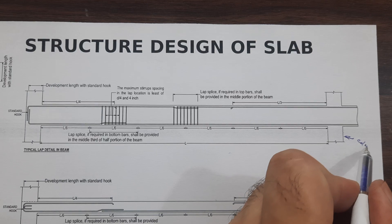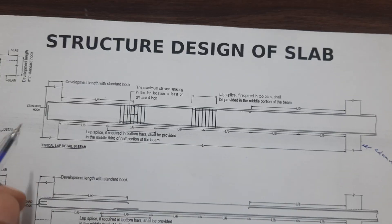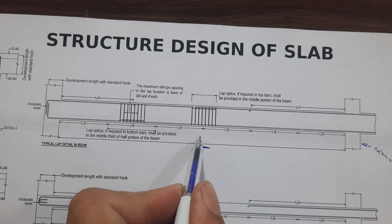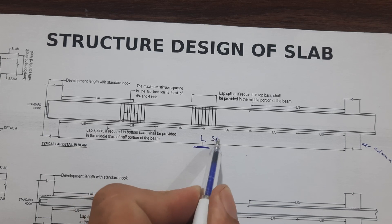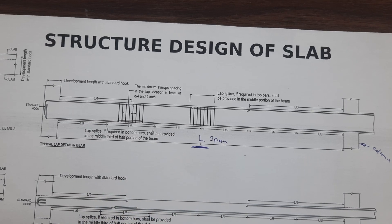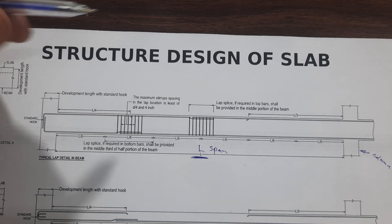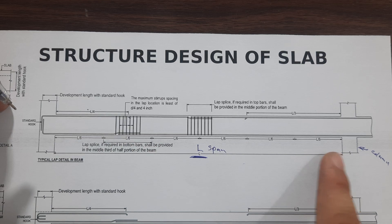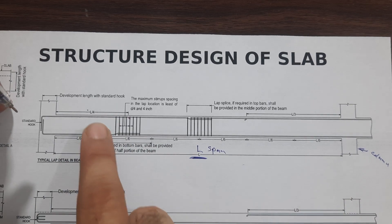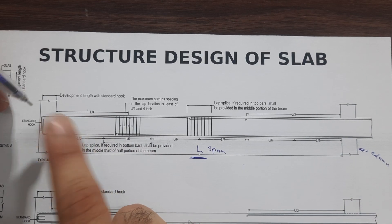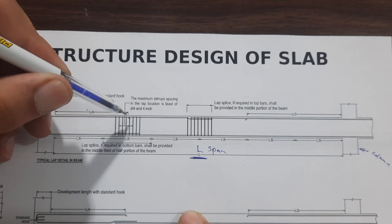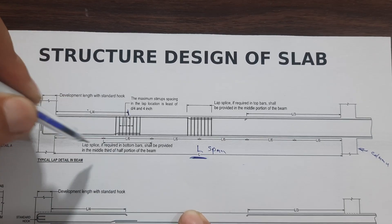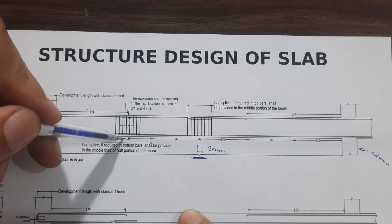This is one column and this is the other column. The span between two columns — you can consider anything — is called L, the span between two columns. At the distance of L/4 — meaning total span between two columns divided by 4, that is L/4 — after L/4, at that position, you are able to provide L/6.